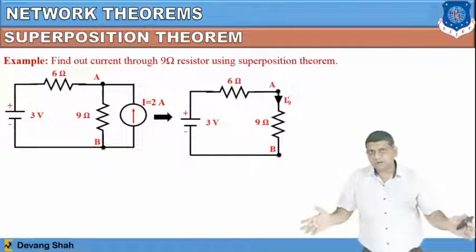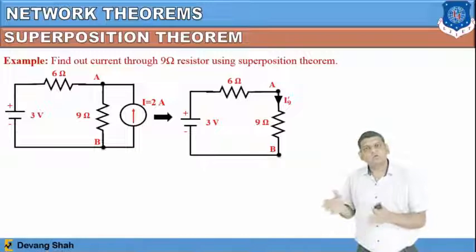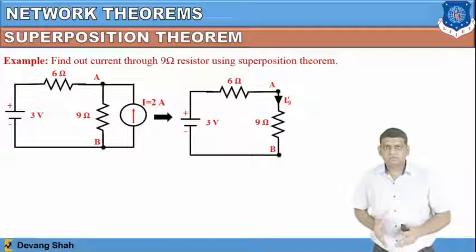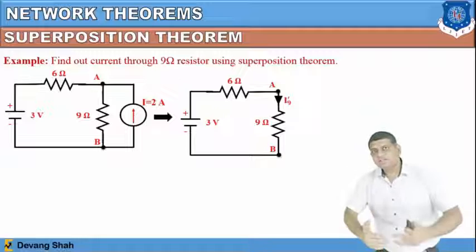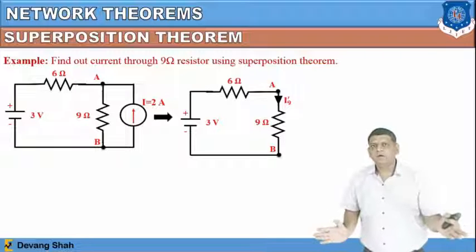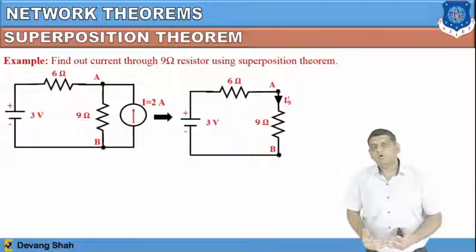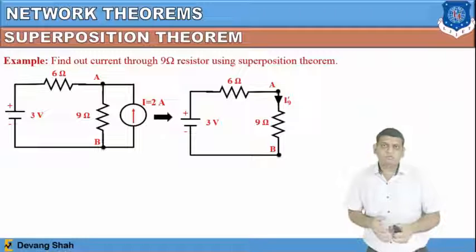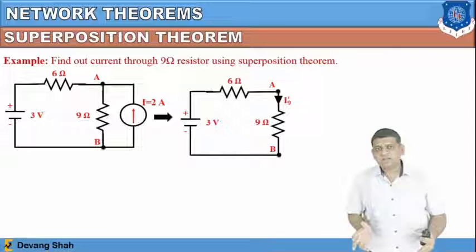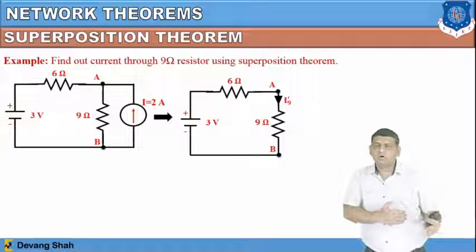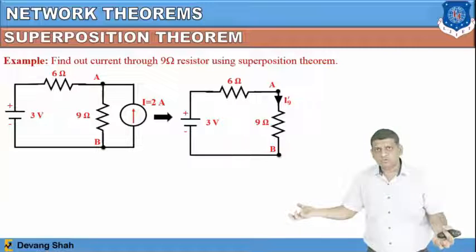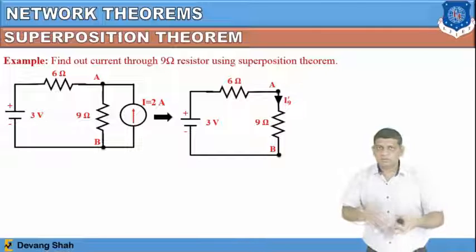When you make a current source open, its value is zero. When you make a voltage source short, the voltage is zero. With the current source open, the circuit is just the 3 volt source in series with 6 ohm and 9 ohm resistances. The current i9' = 3 / (6 + 9), flowing from a to b (top to bottom). Now consider the 2 ampere current source with the voltage source shorted. i9'' = 2 × 6 / (6 + 9) = 0.8 ampere, also from a to b.